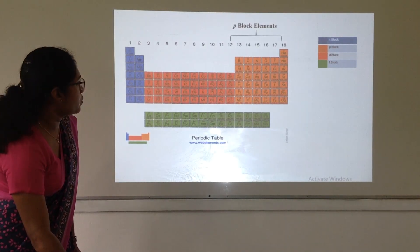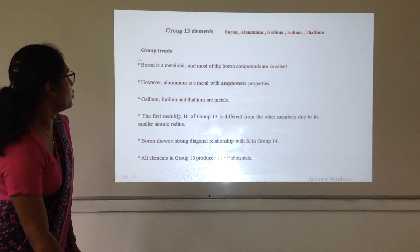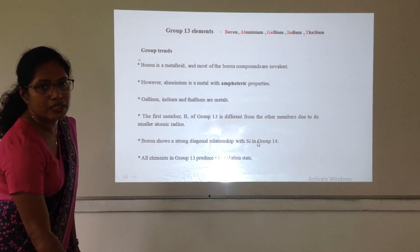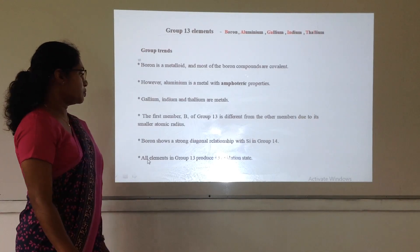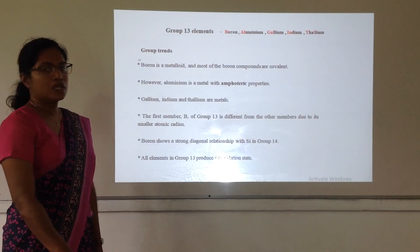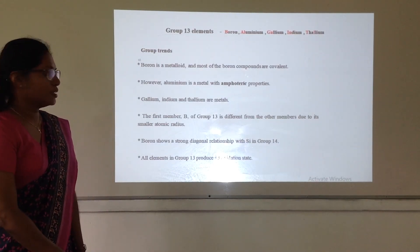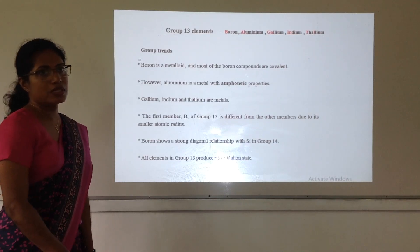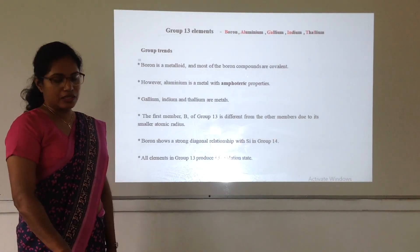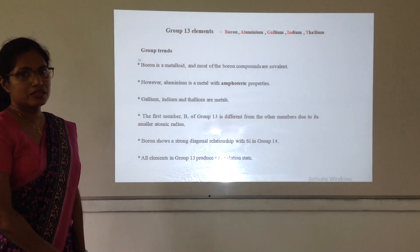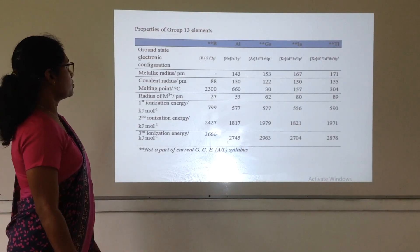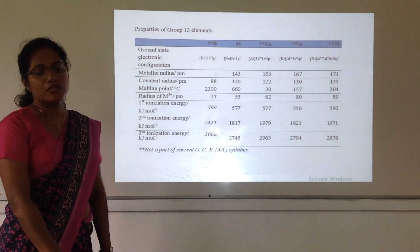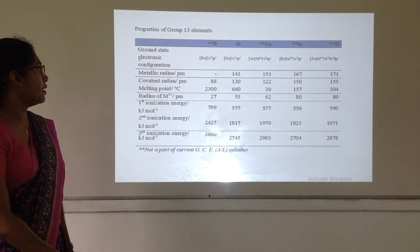That's why I told you boron shows diagonal relationship with silicon in group 14. So, then all elements in group 13 produce plus 3 oxidation states because they consist 3 electrons in their valence shell.